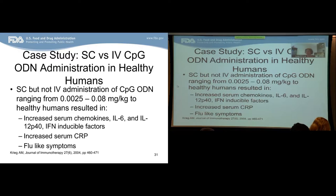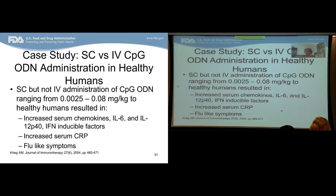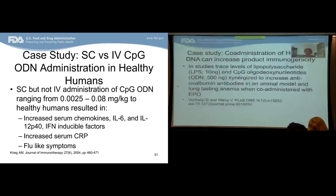Here's a case study on subcutaneous versus intravenous administration of CpG oligodeoxynucleotides. CpG motifs are common in bacterial DNA, and toll-like receptors recognize these motifs and can induce innate immunity. In this study, subcutaneous but not IV administration of CpG-ODN at various doses in healthy humans resulted in increased serum chemokines, increased serum C-reactive protein, and flu-like symptoms. This shows that depending on route of exposure, you induce very different effects with the same antigen.